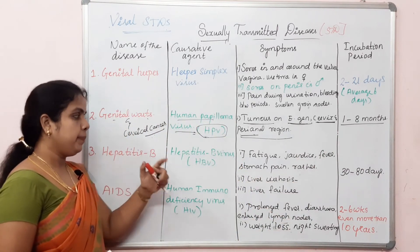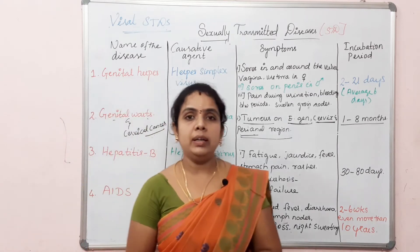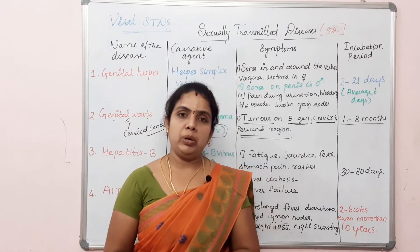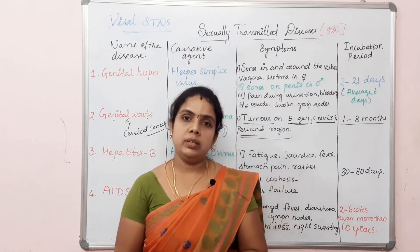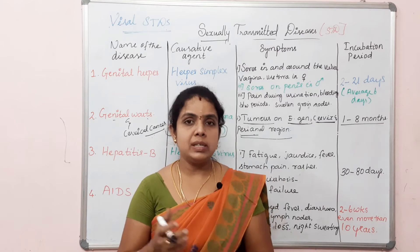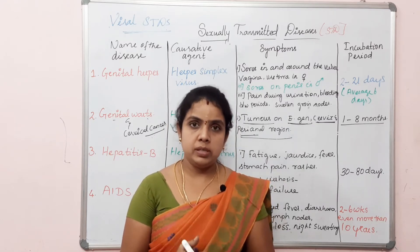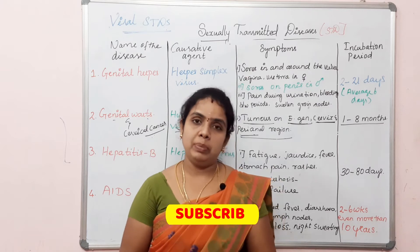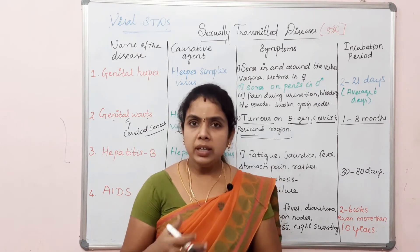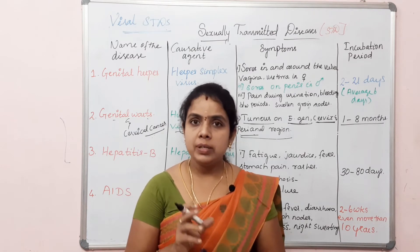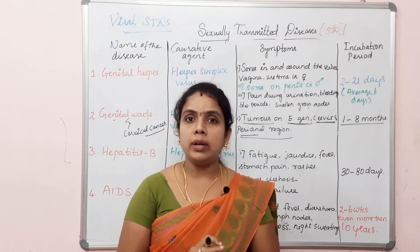Now we will see Hepatitis B. Hepatitis affects the liver. There are different types: Hepatitis A, B, C, and D — four types. Hepatitis B is a viral disease and is transmitted through sexual contact.